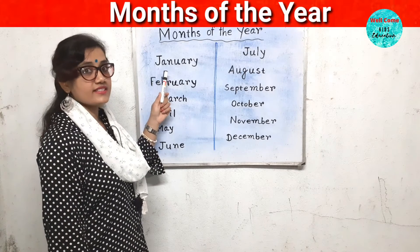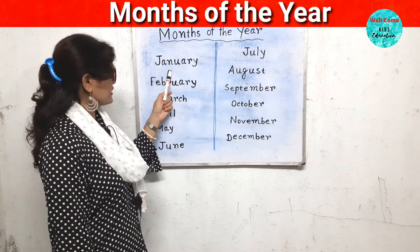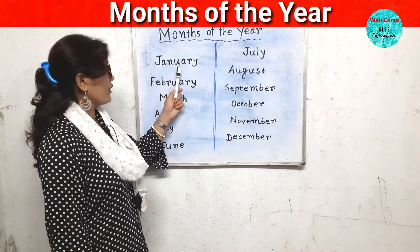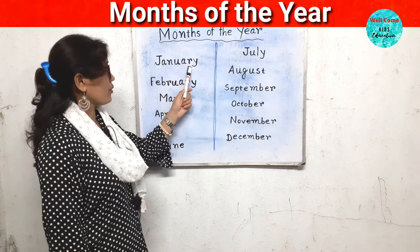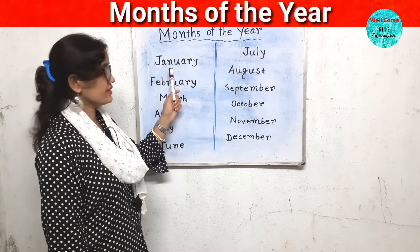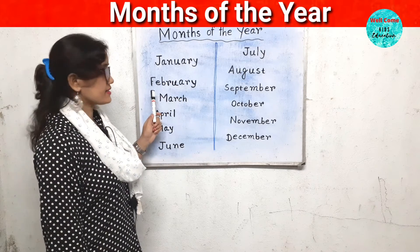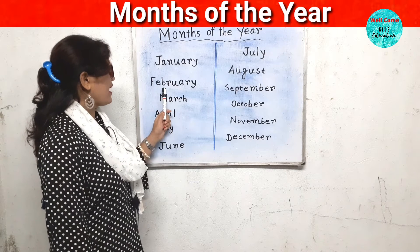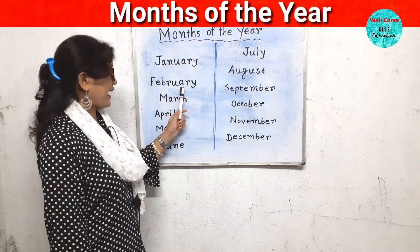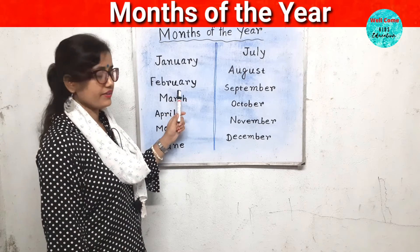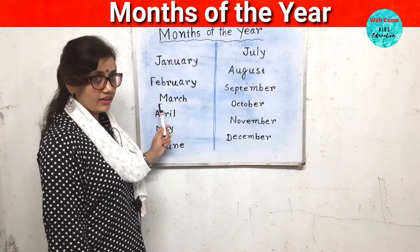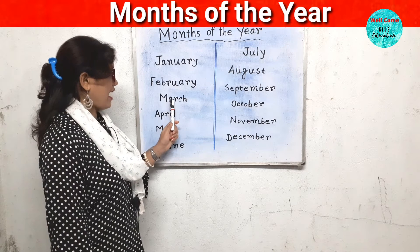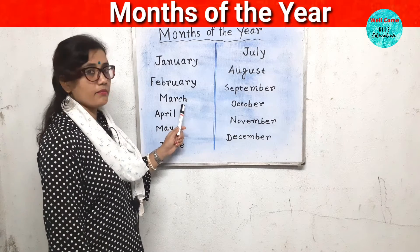The first month is January. J-A-N-U-A-R-Y. January. The second month is February. F-E-B-R-U-A-R-Y. February. The third month is March. M-A-R-C-H. March.